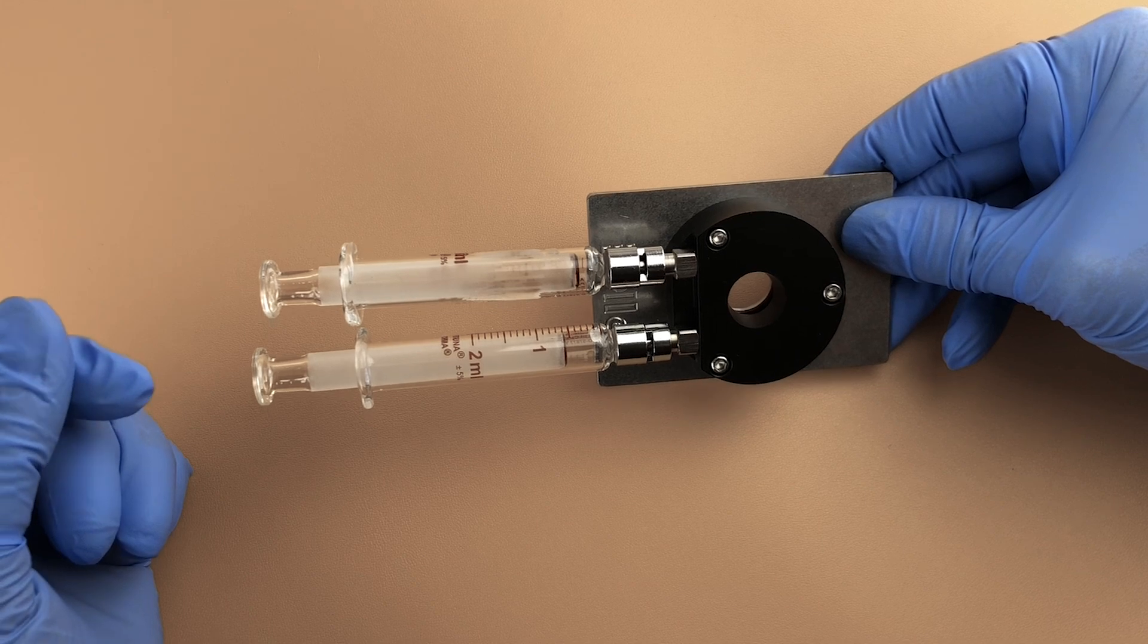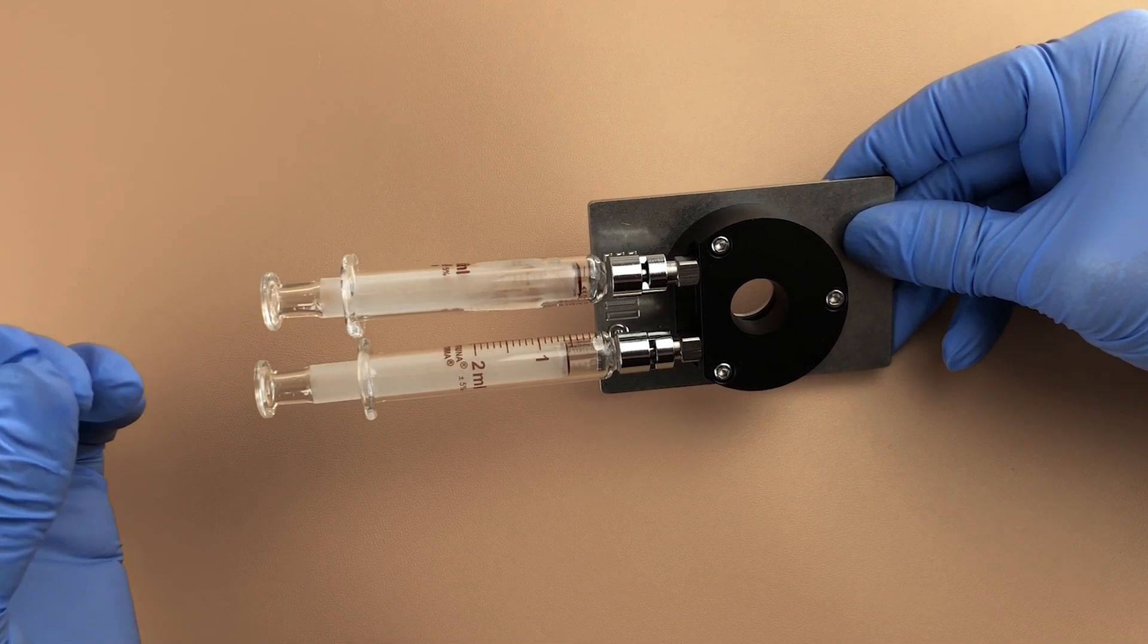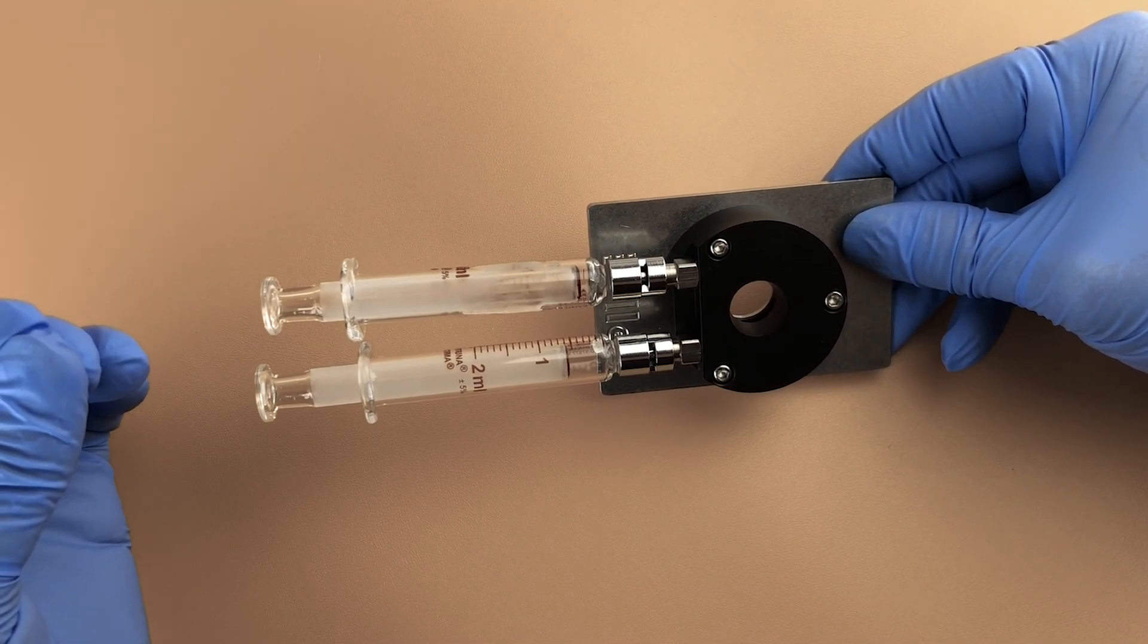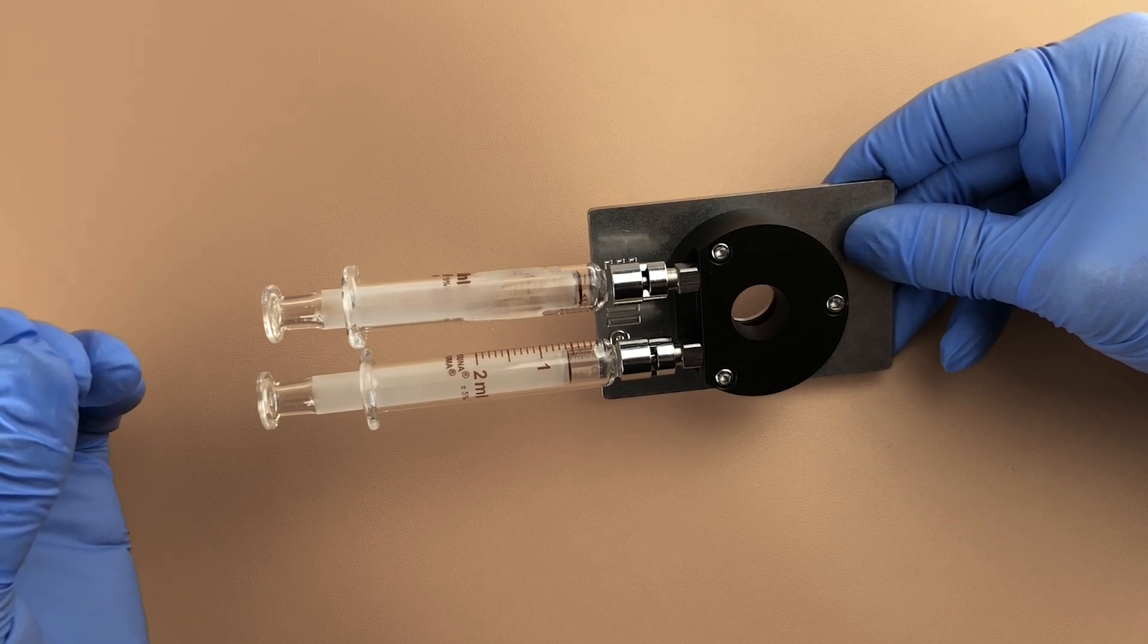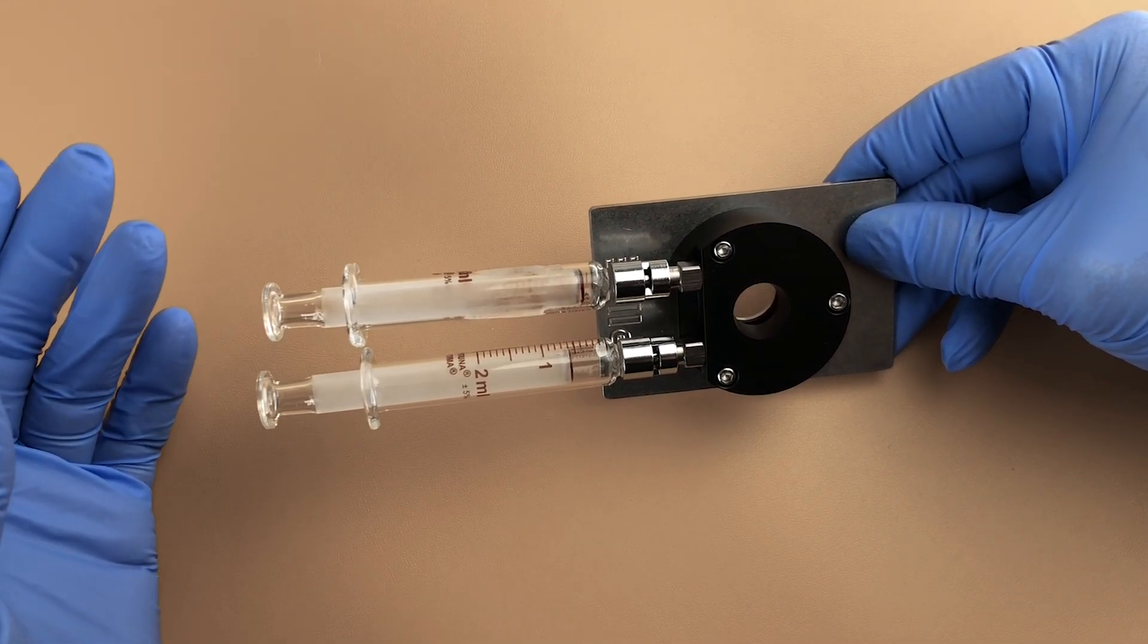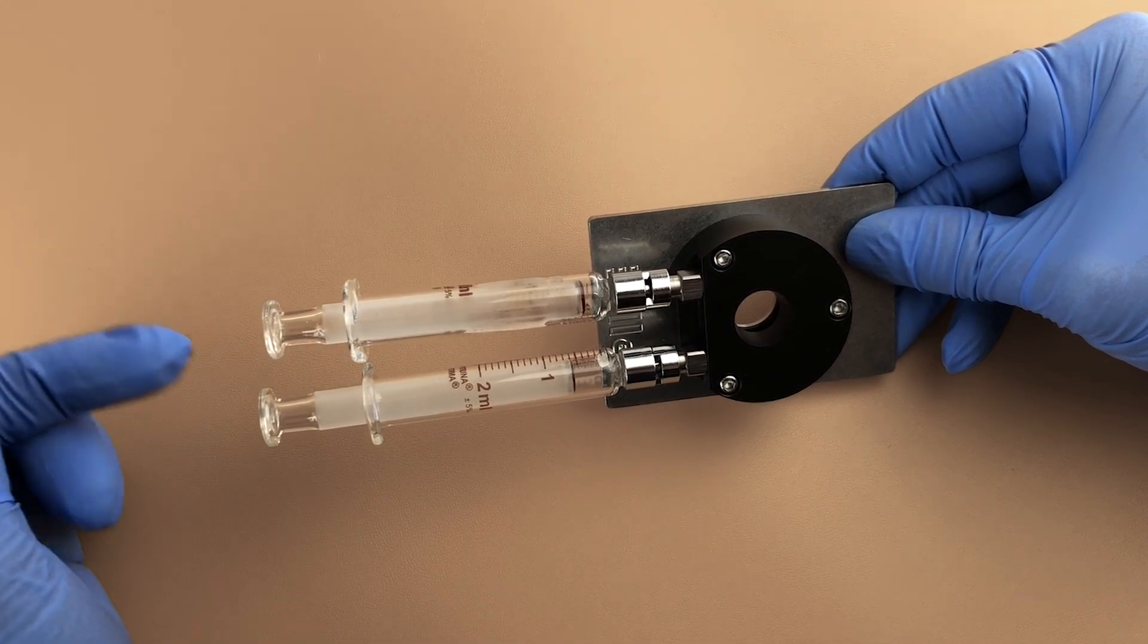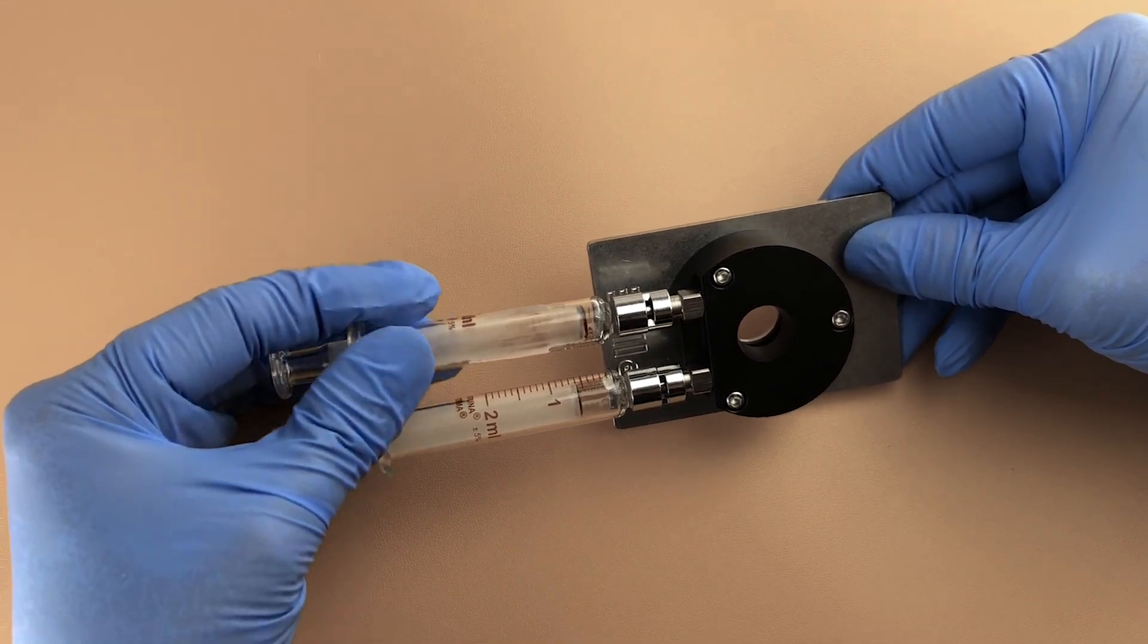Now if I'm using a very small path length cell like I did recently, it was a 25 micron cell and the sample was thick. Instead of using two 2 millimeter syringes, I used one 2 millimeter syringe and my empty syringe was a 5 millimeter syringe.